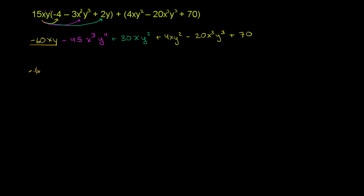So we have negative 60xy. And then let's look over here. Negative 45 x to the third y to the fourth. So is there any place where we can combine that? x to the third y to the fourth, so nope. This is x to the third y to the third, so that doesn't work either. So we just have to keep that.